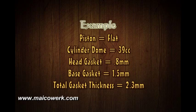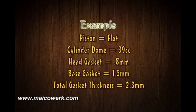Let's stick with our example of an RM400. We'll say that the piston has a flat top, the cylinder dome is 39cc of volume, the head gasket is 0.8mm, and the base gasket is 1.5mm, bringing a total gasket thickness of 2.3mm.